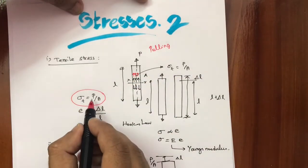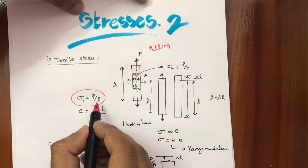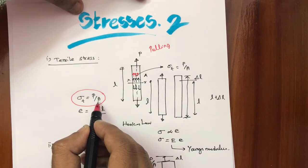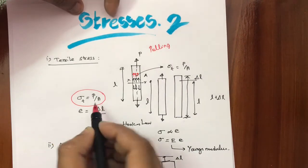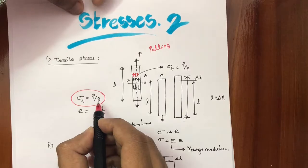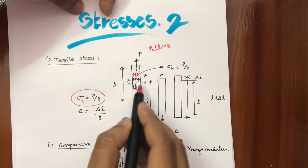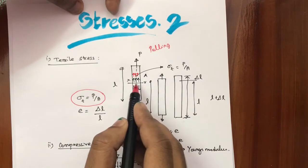Tensile stress is nothing but the applied tensile load divided by the cross-sectional area. Whatever may be the cross-section — rectangular, circular, or square — based on the cross-section, the stress will be generated on it.